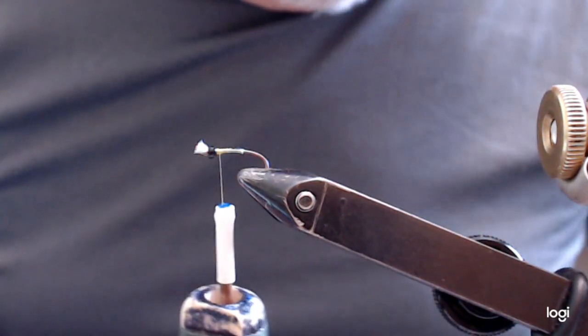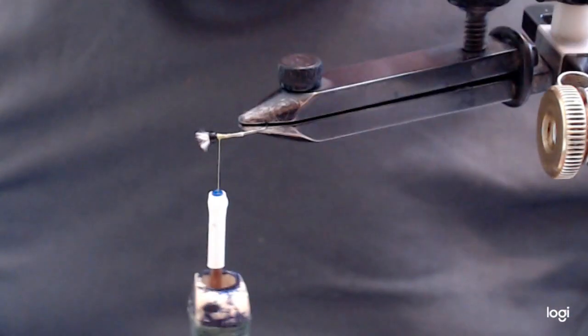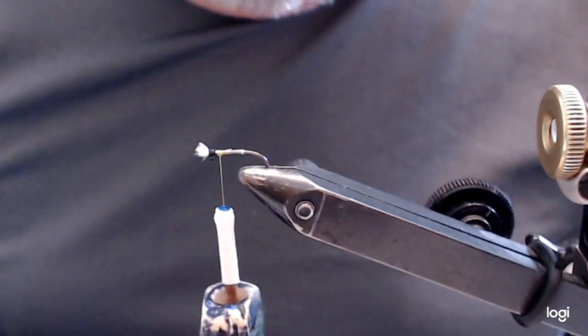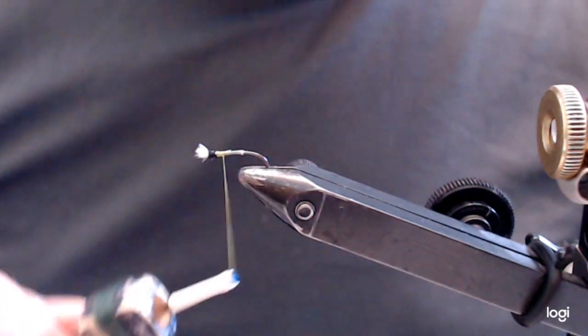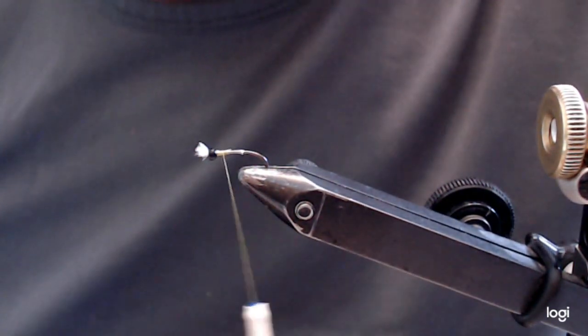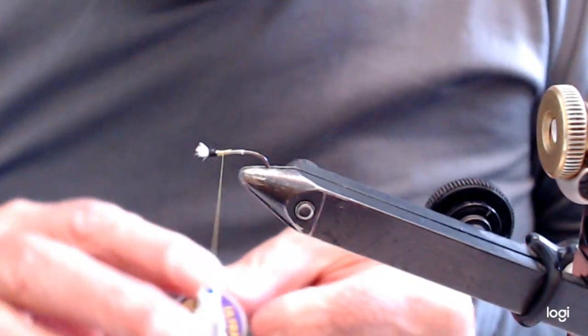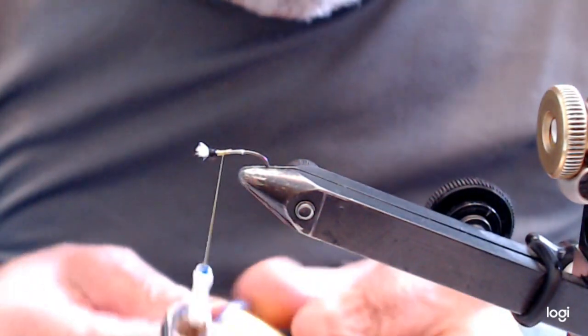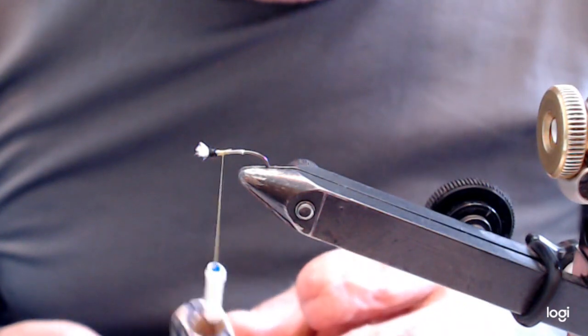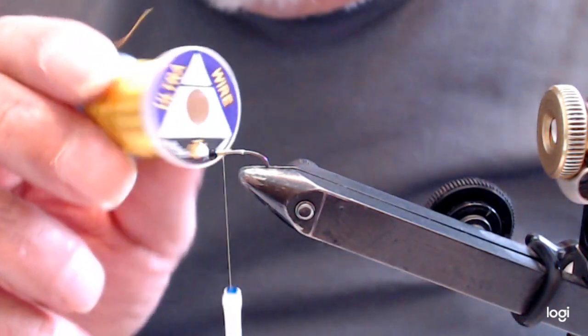There. That's all that's necessary for the gill. Now, I'm going to tie in a piece of wire. It's hot yellow wire.